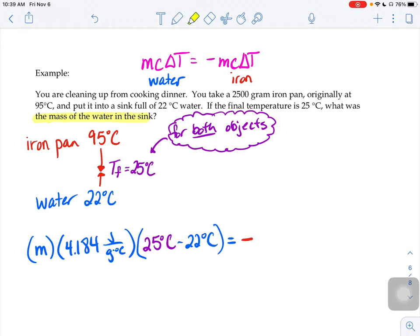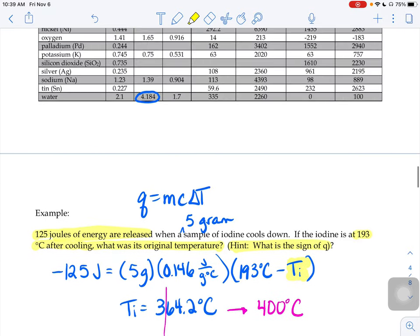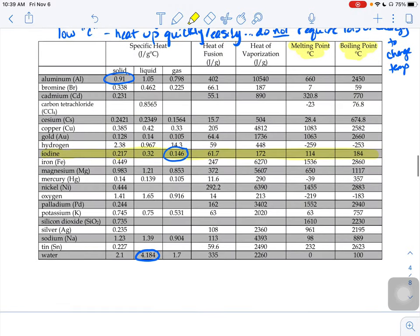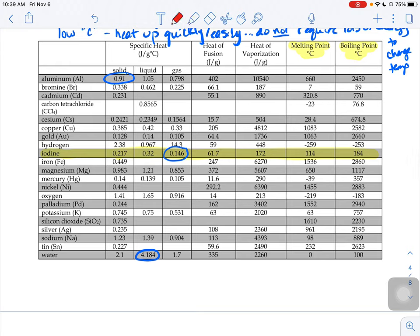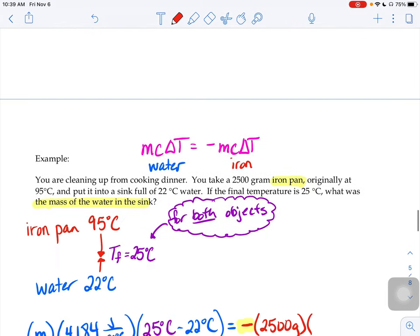We're going to set that equal to, on the other side, negative. Negative, don't forget your negative. Our iron pan is cooling down. We know the mass of the iron pan. They told us was 2,500 grams. I need the C value of my iron pan. So I go back to my chart. And I need the C value for iron. It's an iron pan. So that's a solid. So I'm going to use the number 0.449 joules per gram degree C.